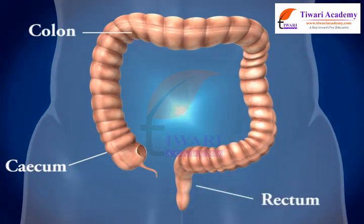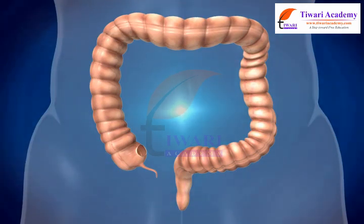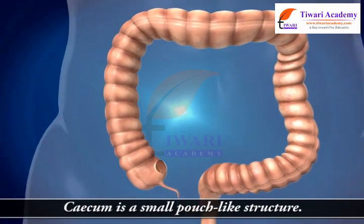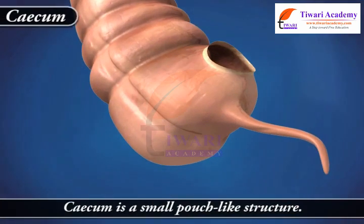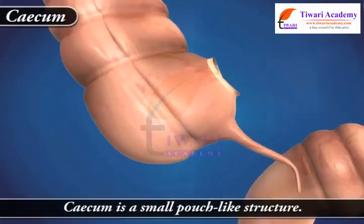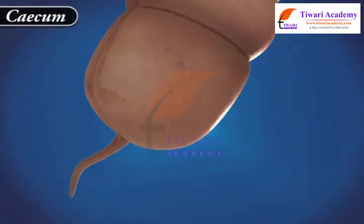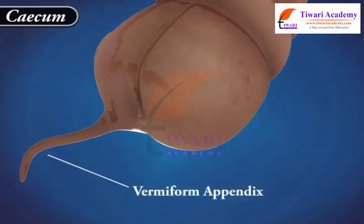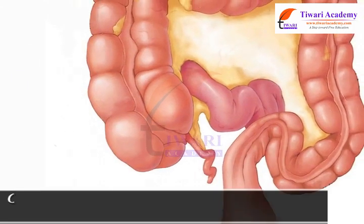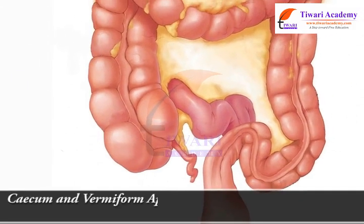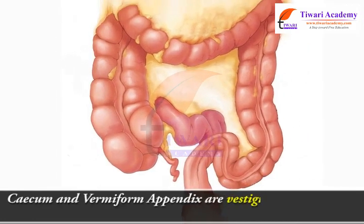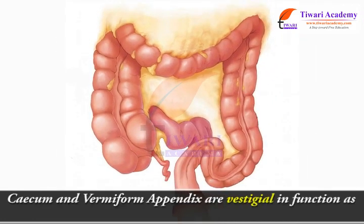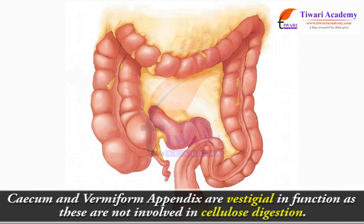Let us learn more about the cecum. Cecum is a small pouch-like structure. Cecum ends into a tubular structure called the vermiform appendix. Both cecum and vermiform appendix are vestigial in function, as these are not involved in cellulose digestion.